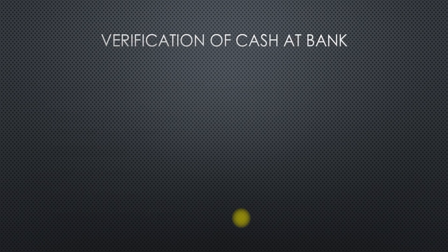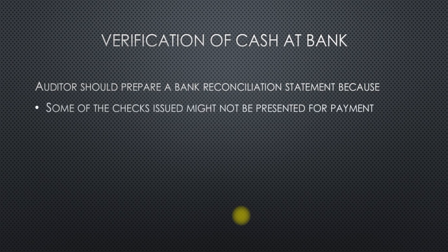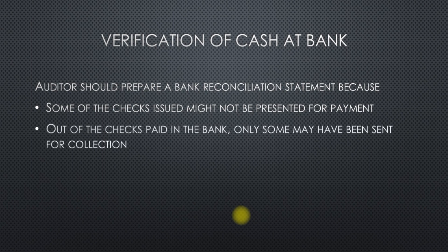Next is verification of cash at bank. The auditor should verify cash at bank by comparing the balances in the bank passbook with the balances shown in the cash book's bank column. It is understandable that for cash at bank, some of the cheques issued might not be presented for payment, and out of the cheques paid into the bank, only some may have been sent for collection.